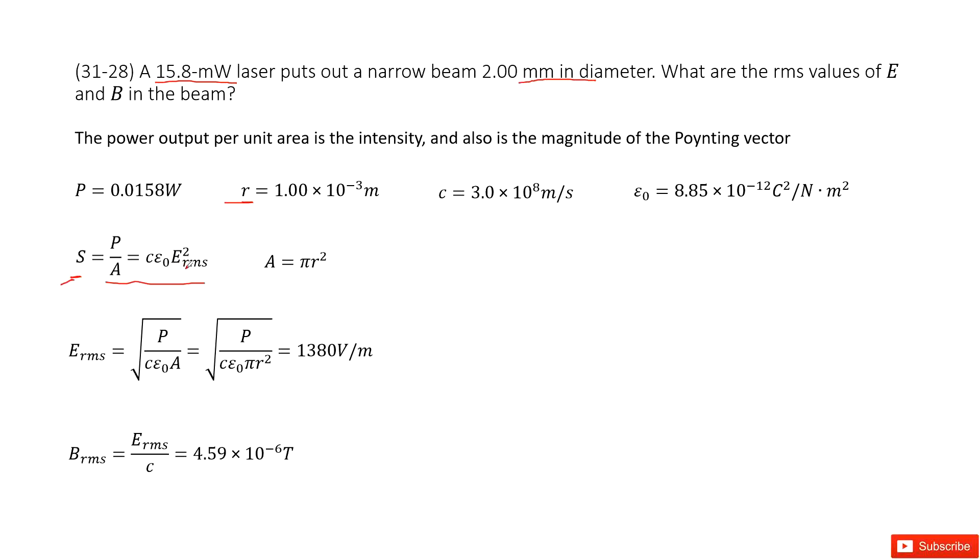Now we can solve the equation for the E rms. So E rms is the square root of P over c epsilon A and A is replaced with pi r squared. Now in this term we can see all the quantities are given. So you can input all the given quantities to get the answer.